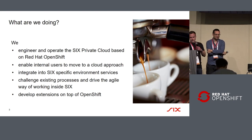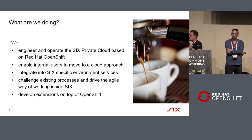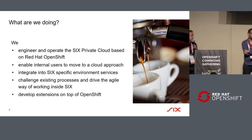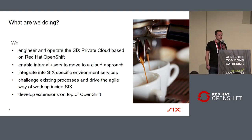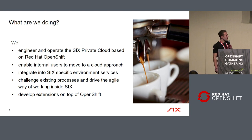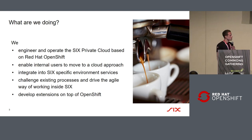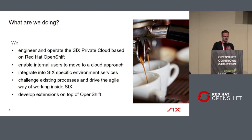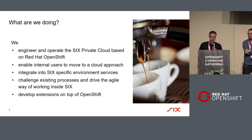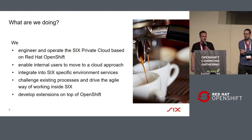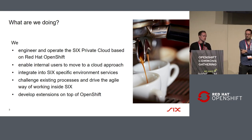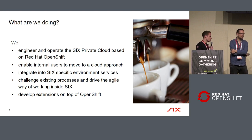What are we doing? We engineer and also operate the Six private cloud based on Red Hat OpenShift. Currently we are running on 3.9, looking forward to the release of 4.x. We're also doing the onboarding for our customers — we have a big engagement with our internal customers to get them on our cloud. We also have to integrate a lot of things into the existing Six environment, which is really challenging, as we'll show you.